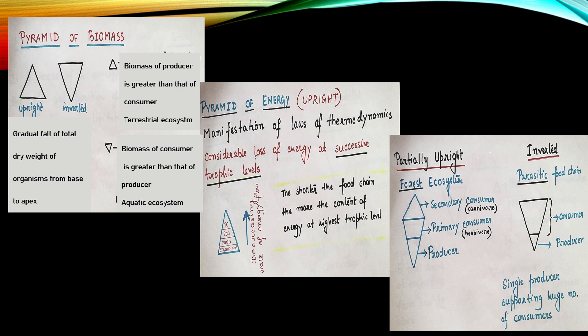Then comes pyramid of energy. This is also an upright one. Manifestation of laws of thermodynamics is always to be considered while studying pyramid of energy. Considerable loss of energy is seen at successive trophic levels here. The amount of energy drastically decreases at various trophic levels from the base to the apex. The shorter the food chain, the more the content of energy at highest trophic levels.